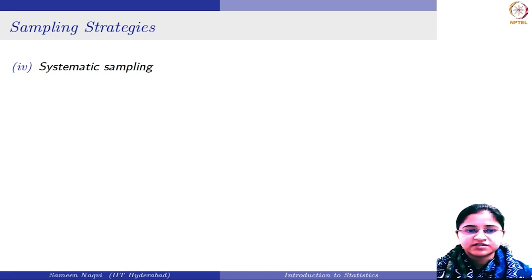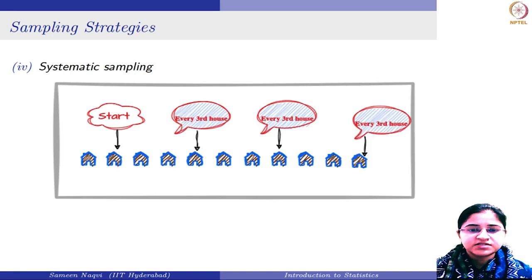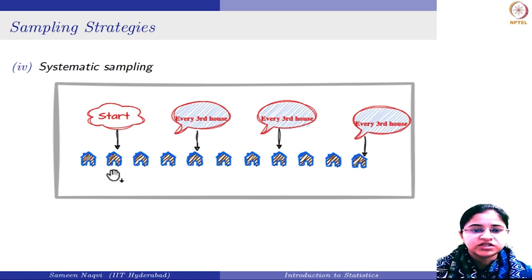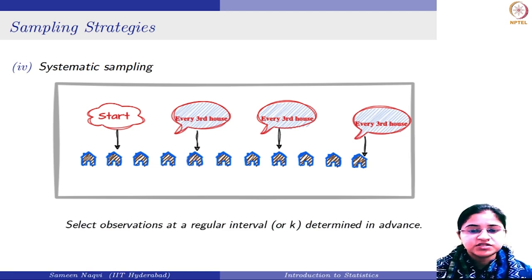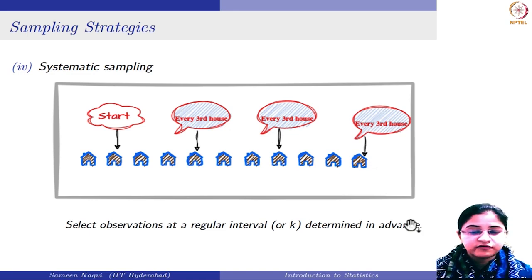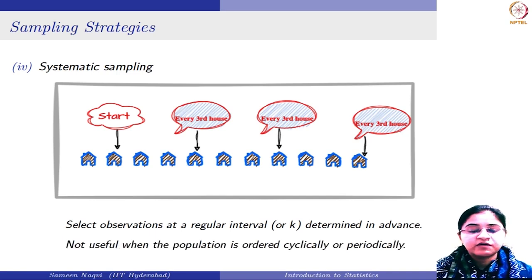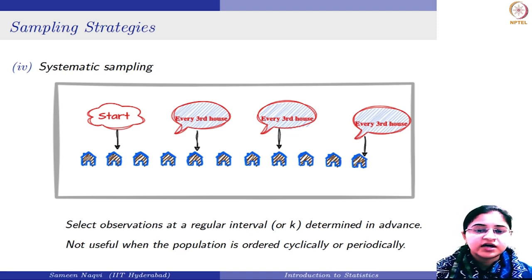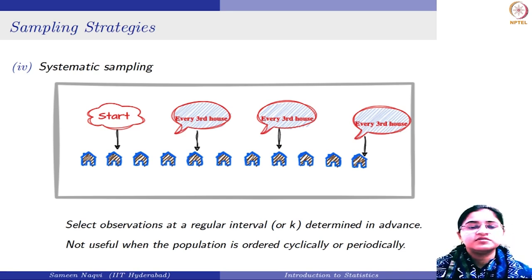Next is systematic sampling. In systematic sampling, you start with some random starting point and then follow a systematic, predetermined flow. For instance, you might consider a K value of 3 and collect data from every third house in the locality. This works fine if you have a list of all individuals, but it is not useful when the population is ordered cyclically or periodically, because you will get a similar set of data each time. These are the four commonly used sampling techniques.